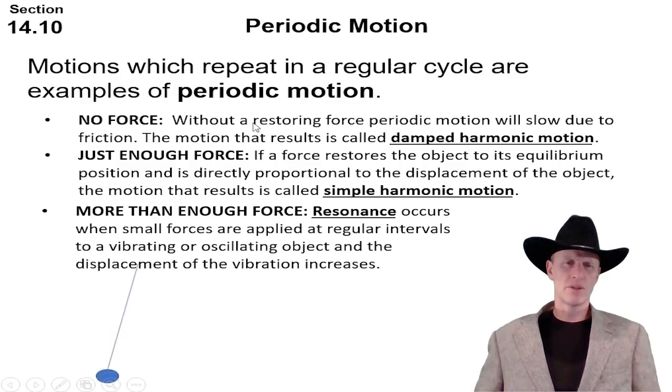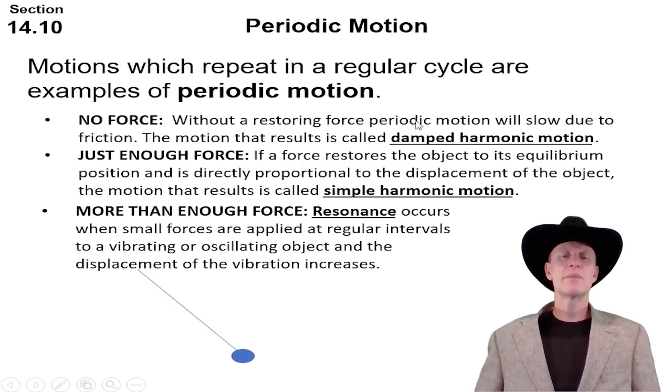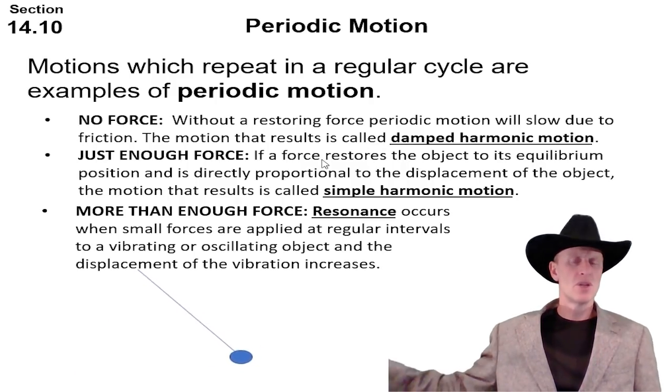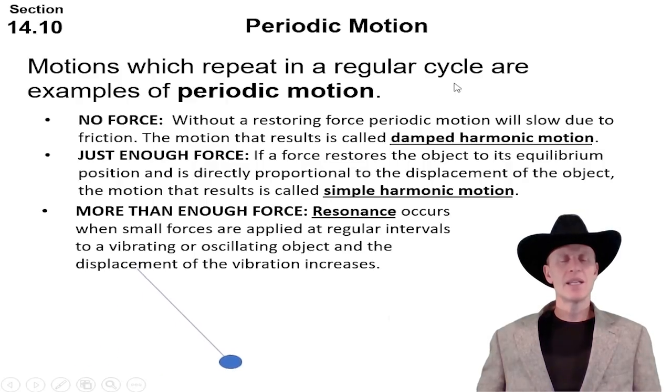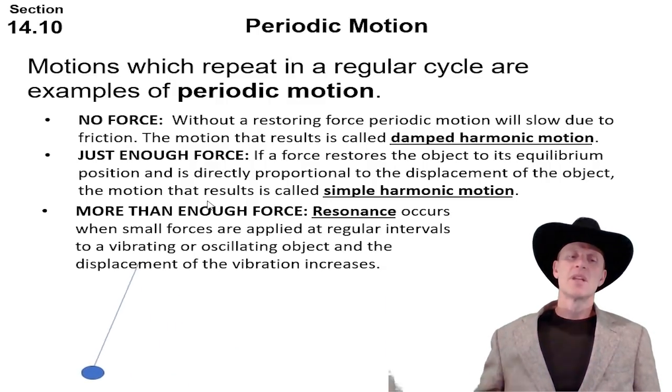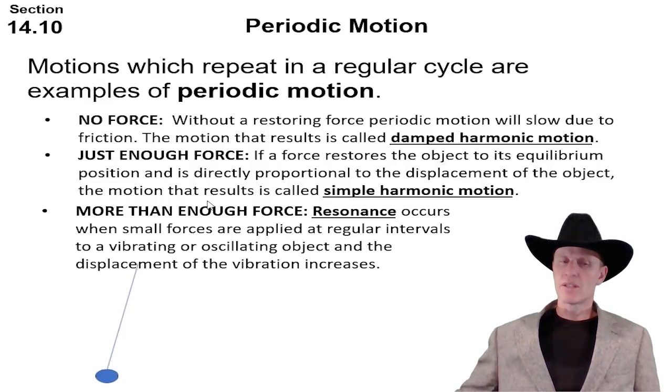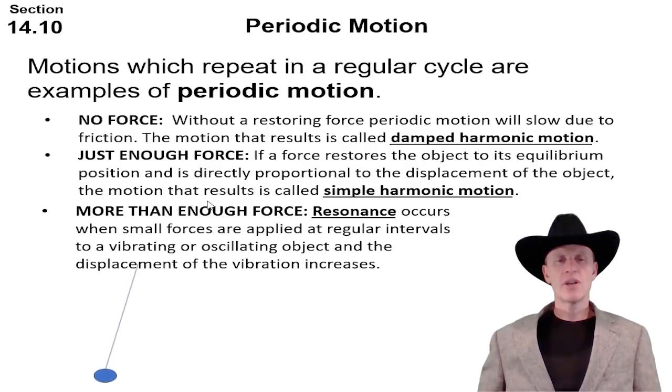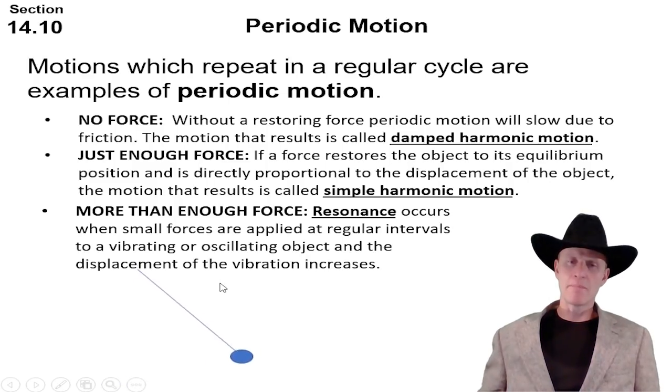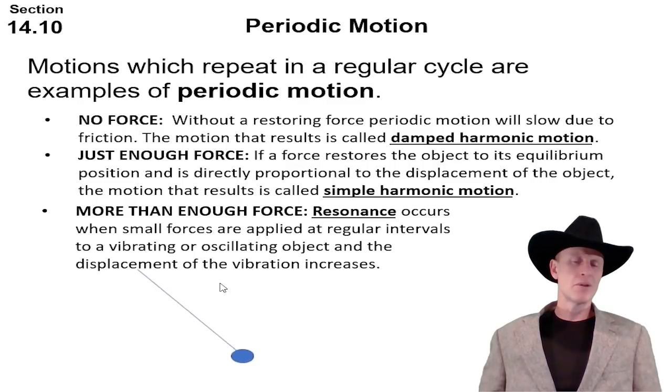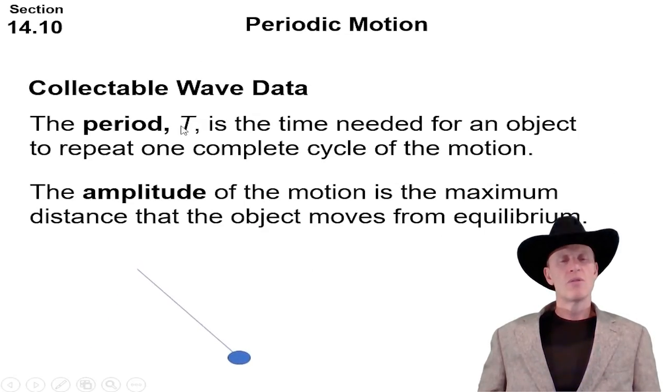Motions that repeat in a regular cycle are examples of periodic motion. If you just let a pendulum go, the force of gravity and air friction will slow its motion down until it stops moving, and that's what we call damped harmonic motion. But if there's a restoring force on the object so that it goes back to the same distance, we call that simple harmonic motion. If you provide a greater force to the object and this object swings a greater distance each time, then we call that resonance. That's sort of what happened to the Tacoma Bridge.